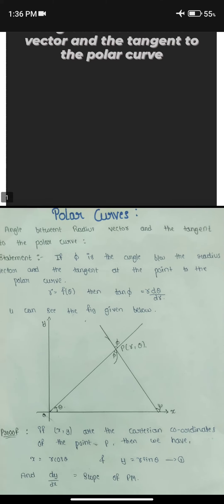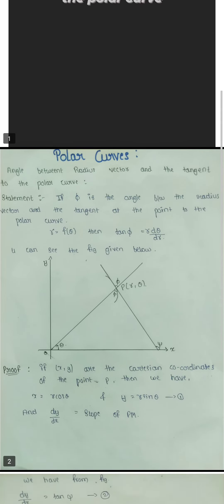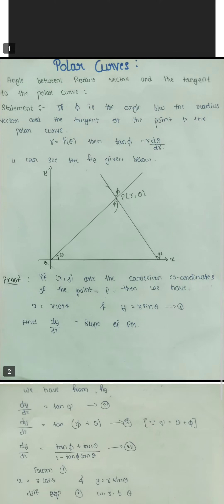Polar Curves. Angle between radius vector and the tangent to the polar curves. Statement: If ψ is the angle between the radius vector and the tangent at the point on the polar curve r equals f of theta, then tan ψ equals r dθ by dr.